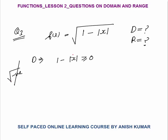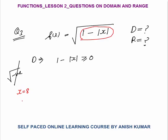The number inside the square root cannot be negative — it will give a complex number. So the number inside the square root, that is 1 minus mod x, must be positive or zero, because the square root of a negative number will be a complex number, not a real number. For example, if you put x = 8, this becomes 1 minus 8 = minus 7 inside the square root, which gives a complex output — not real.